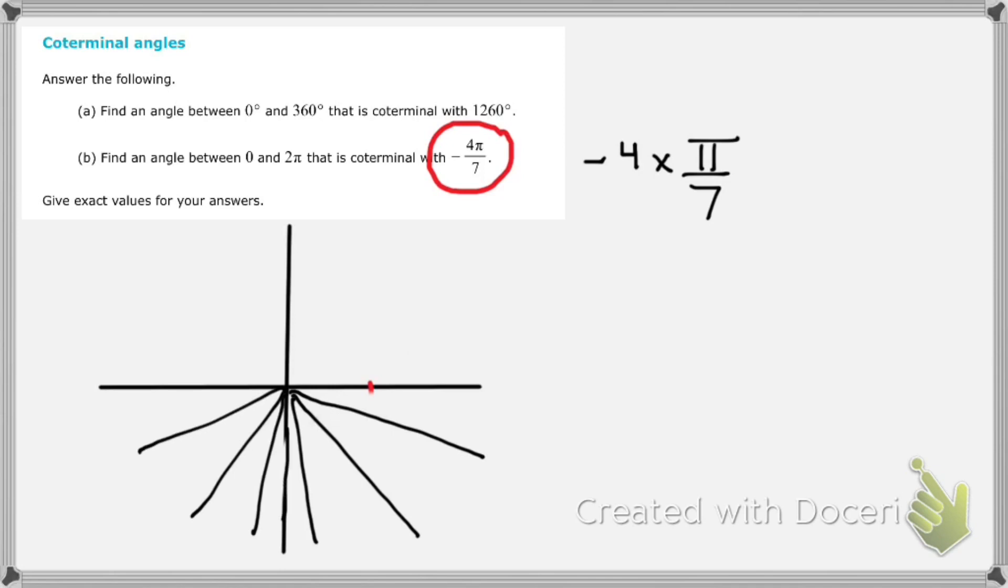Like something like 1, 2, 3, 4, 5, 6, and then 7. Something like that. And then I need to do 4 of those. So I'm going to go 1, 2, 3, 4. And that's going to end up over here, somewhere over here is where I would end up with this angle.